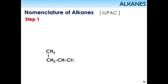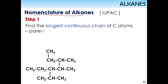Let's see the example for nomenclature — meaning naming of alkanes. What you are going to do: you need to find the longest chain. The longest chain will be the parent chain, and therefore you should have the parent name. So looking at the structure shown, the longest chain runs like this.